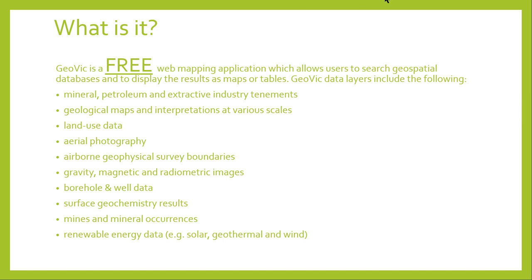Lots of information — land data use, aerial photography, airborne geophysical survey boundaries, gravity, magnetic, radiometric images, boreholes, surface geochemistry, mines, mineral occurrences, renewable energy, thermal, wind, solar. Even crazy things like Bluetooth detection devices which the Victorian police are testing throughout Victoria for mobile phone usage. Believe it or not, you can actually plot them within the mapping system. Pretty crazy, pretty cool, I love it.